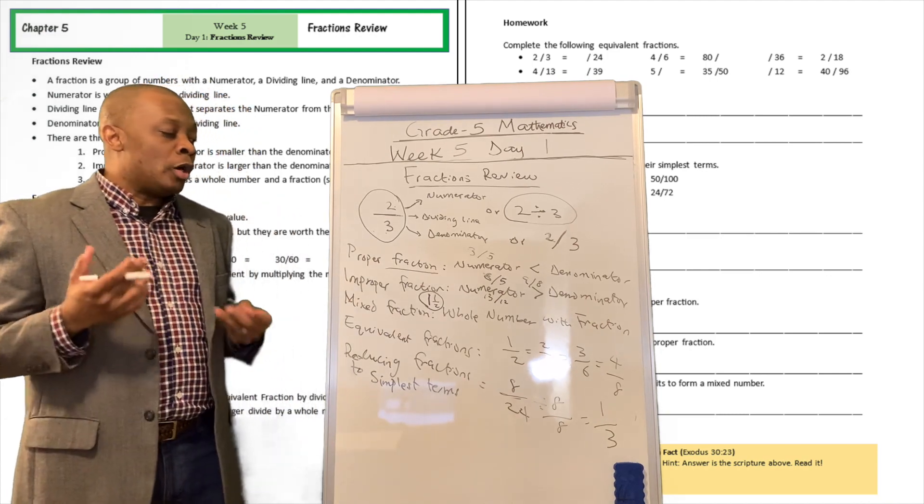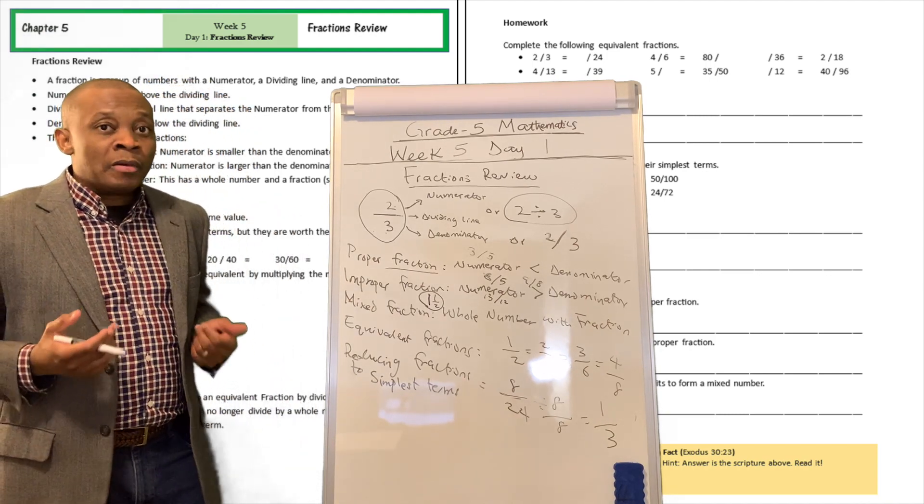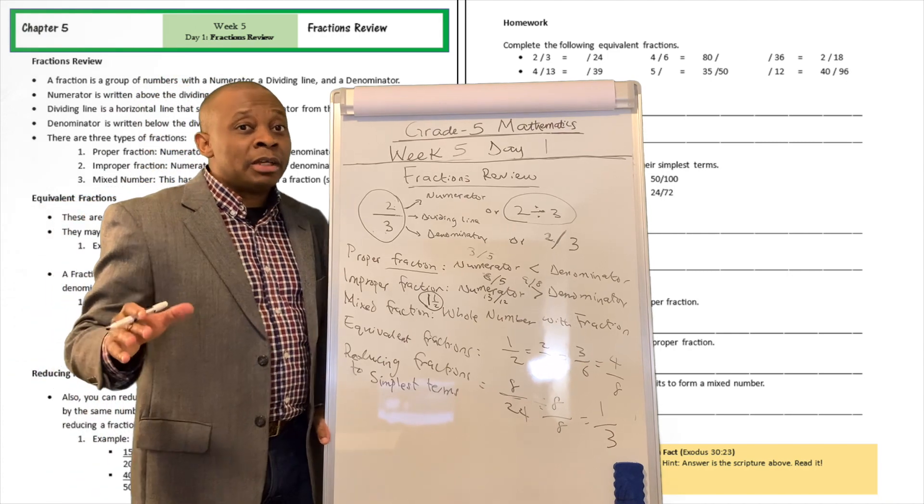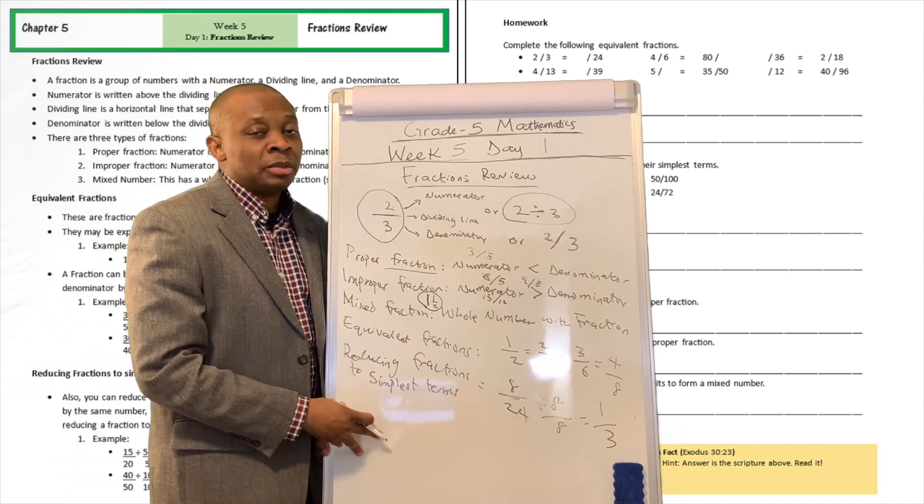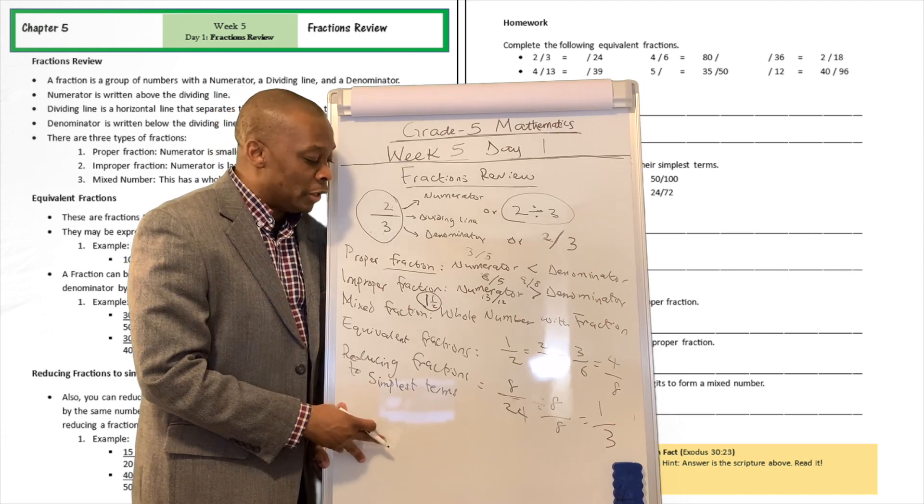We cannot reduce one-third any further. So when you get to a stage where you can't reduce the fraction any further, that's going to be the simplest term, the simplest version of that fraction over there.